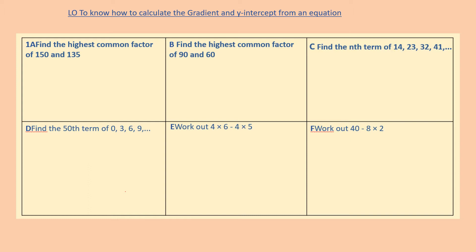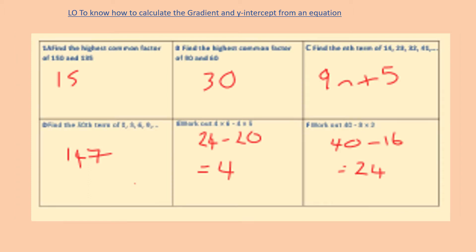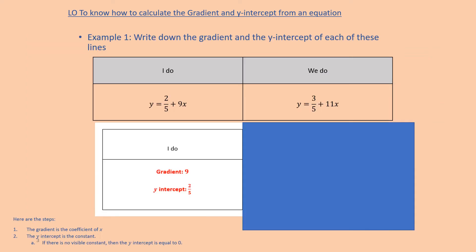Pause the video whilst you have a go at this retrieval practice. The answers are: the highest common factor is 15, B is 30, 9n plus 5, 147, 4, and the last one is 24.